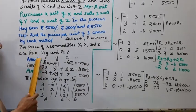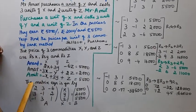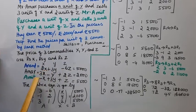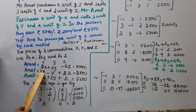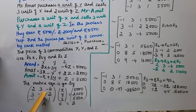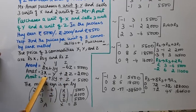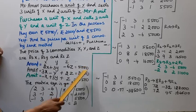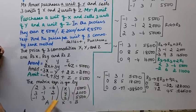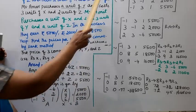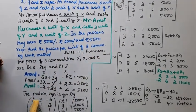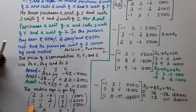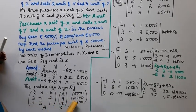We now have three equations. The matrix equation AX = B is given with coefficient matrix: row 1 is [2, 3, -6], row 2 is [3, -1, 2], row 3 is [-1, 3, 1], and the right-hand side B is [5000, 2000, 5500]. The augmented matrix [A|B] is written as: [2, 3, -6 | 5000], [3, -1, 2 | 2000], [-1, 3, 1 | 5500]. We now reduce this to echelon form.